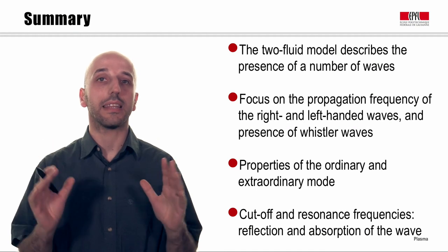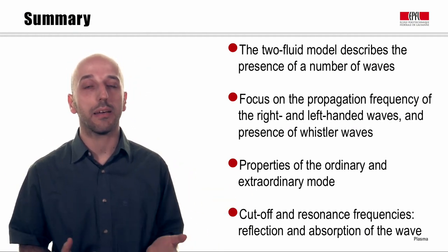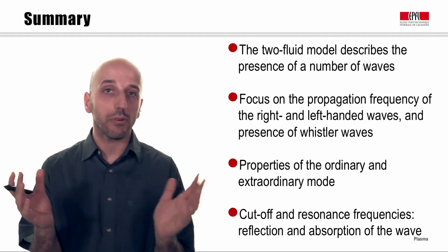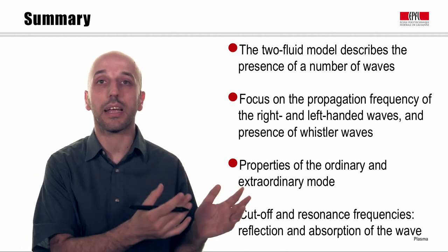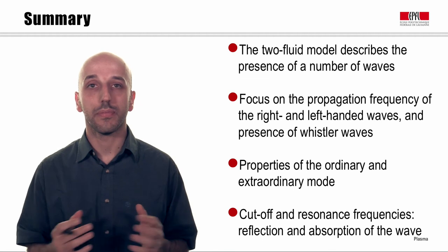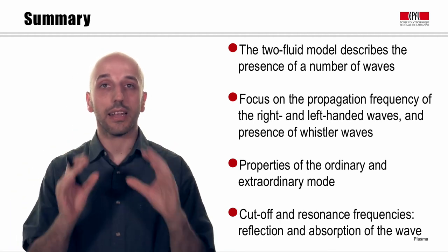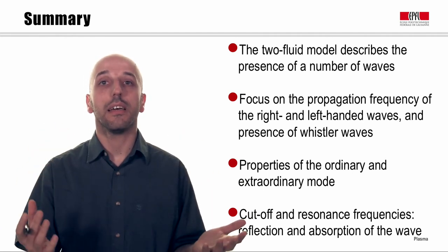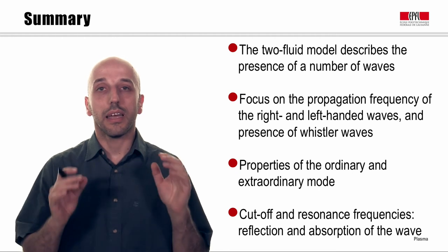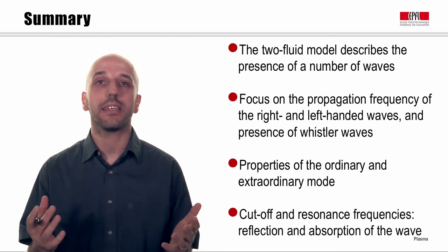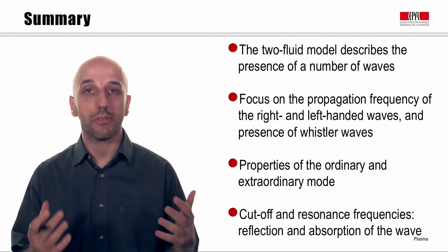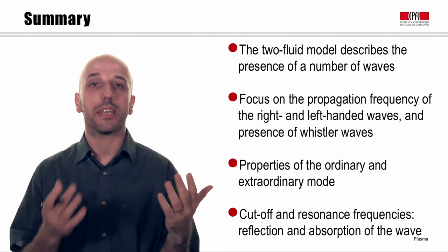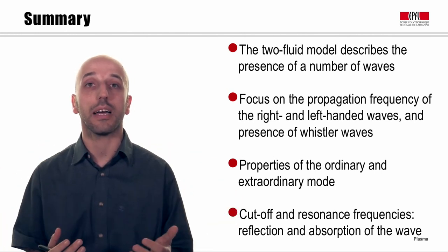In the present module, we have studied properties of waves propagating in a plasma according to the two-fluid model. We identified the ranges of frequency at which left-handed, right-handed, ordinary, and extraordinary modes propagate. We showed that in a certain frequency range, right-handed waves have very interesting propagation properties and are called Whistler waves. Finally, we introduced the cutoff and resonance frequencies, at which waves are respectively reflected and absorbed by the plasma.